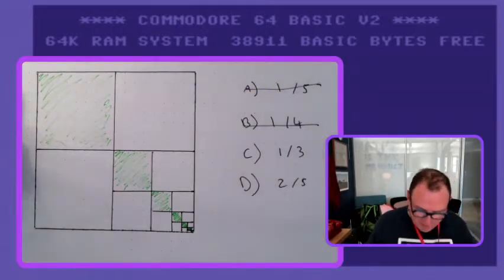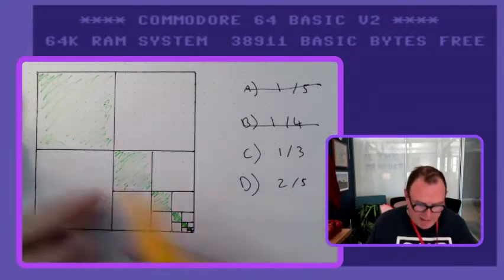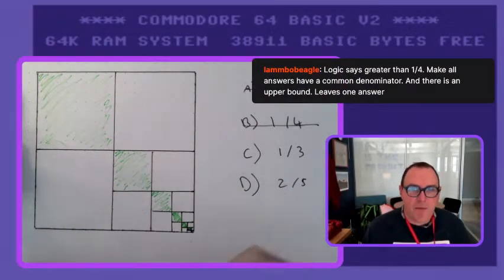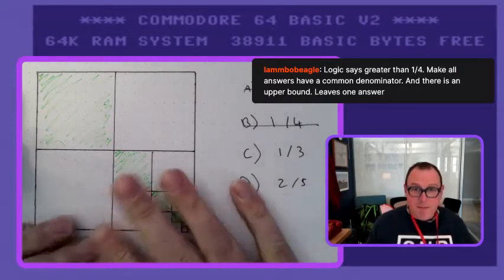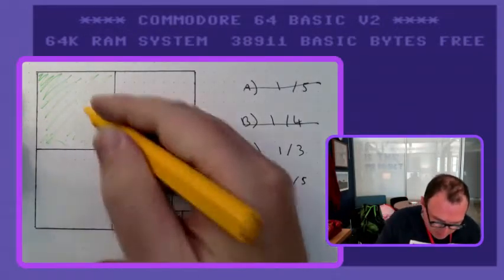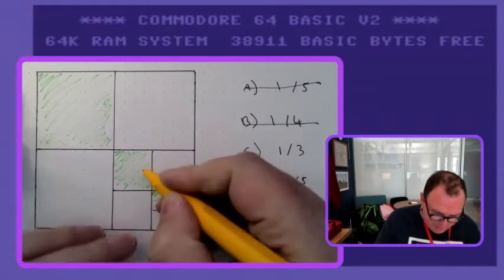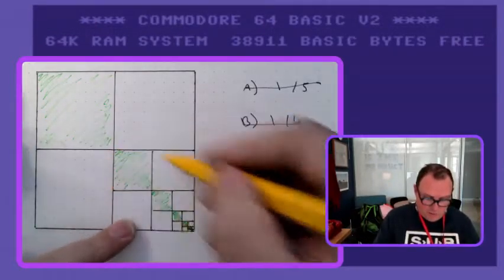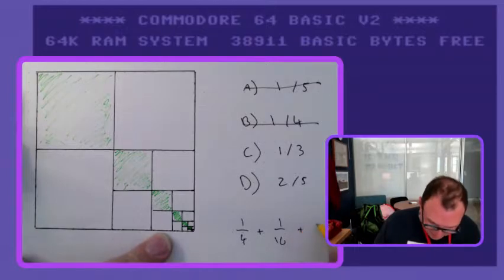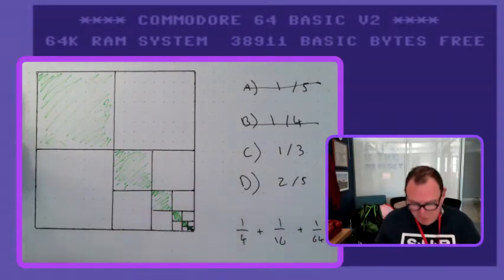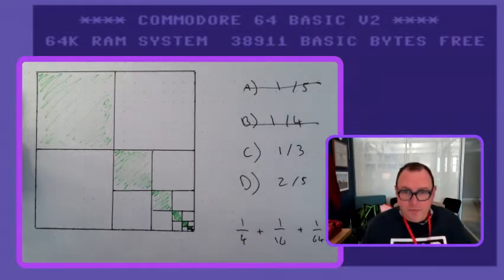A fifth is actually smaller than a quarter, so that's definitely not it. That leaves two reasonable answers: a third or two-fifths. The mathematical approach is to sum the series: a quarter of the overall square, plus a sixteenth, plus one sixty-fourth, plus one two-hundred-fifty-sixth, and so on.